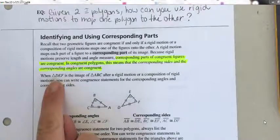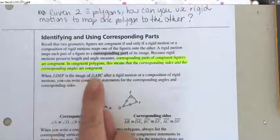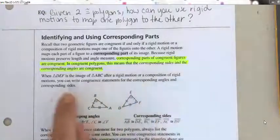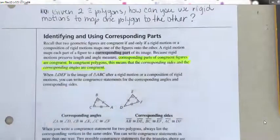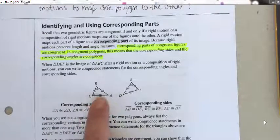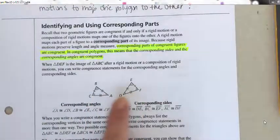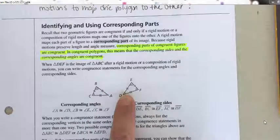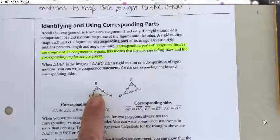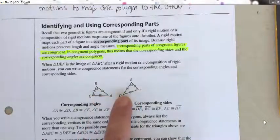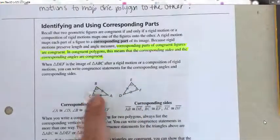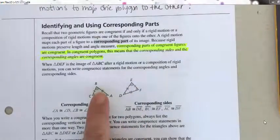When triangle DEF is the image of triangle ABC after a rigid motion or a composition of rigid motions, you can write congruent statements for the corresponding angles and corresponding sides. They're not completely lined up, but I know that angle A is congruent to angle D. So if I were to do some type of transformation to get this triangle on top of that triangle, A and D better be on top of each other.